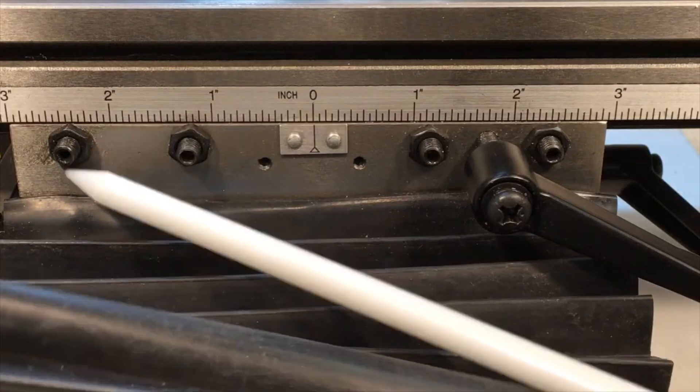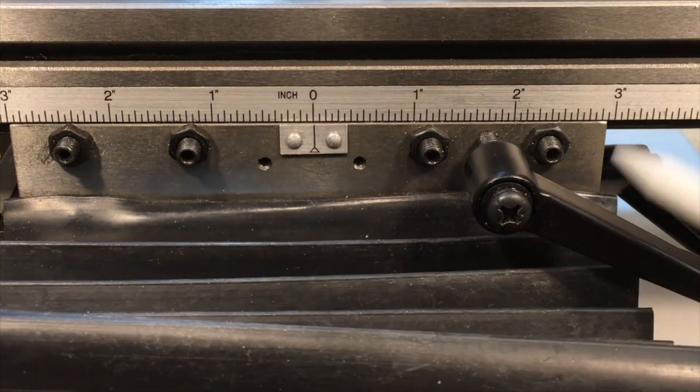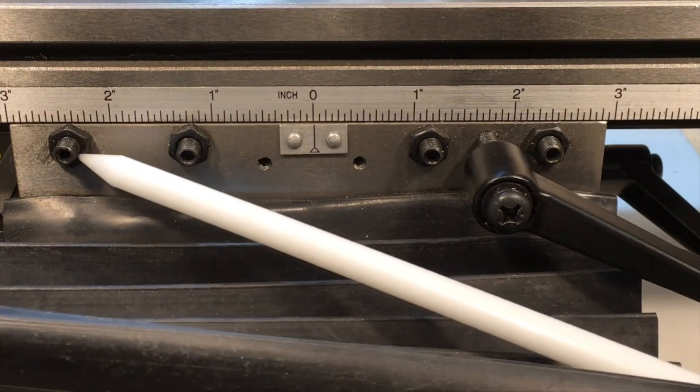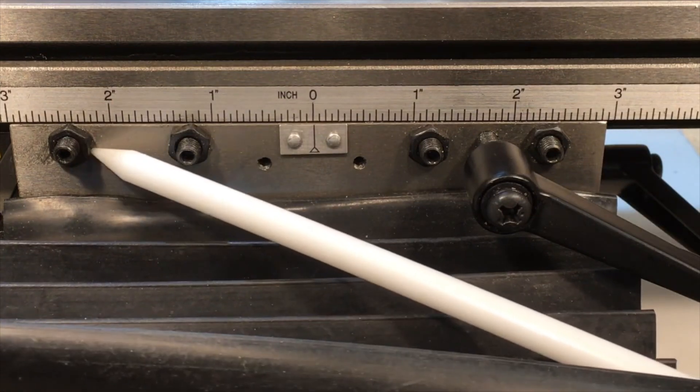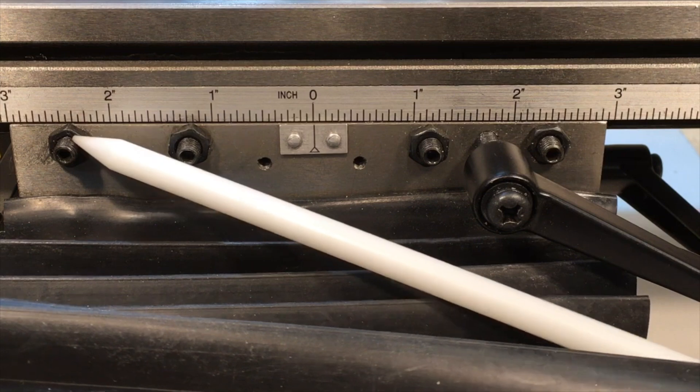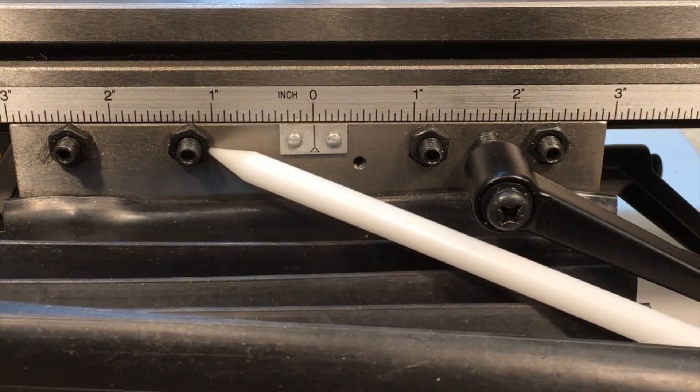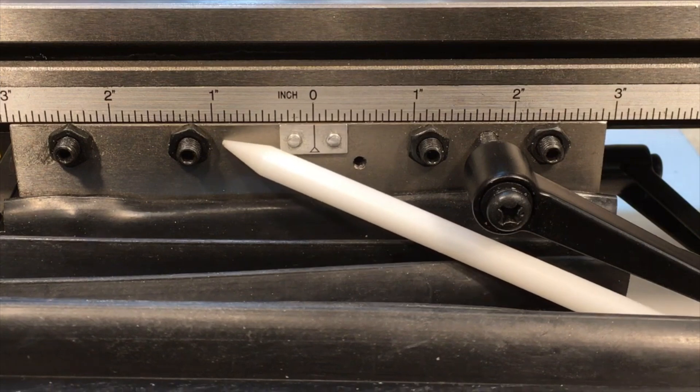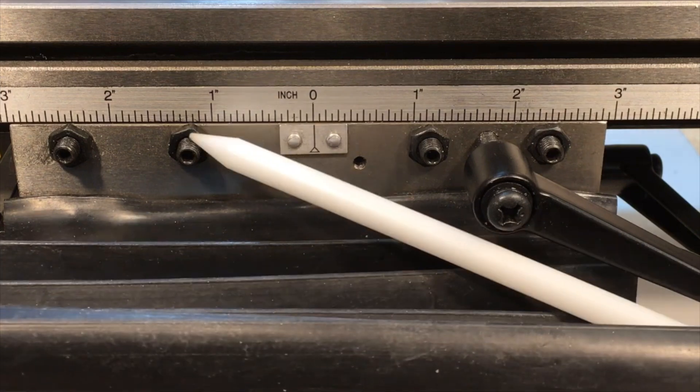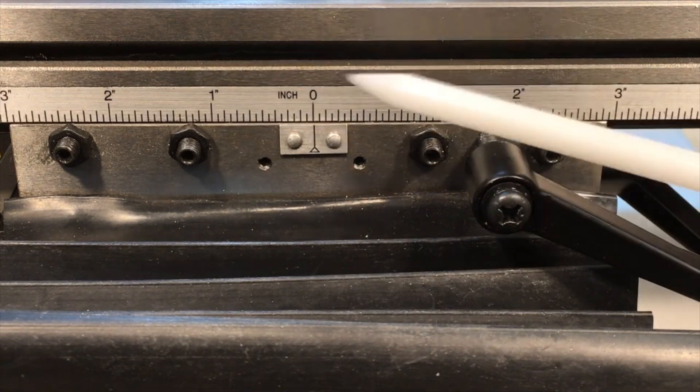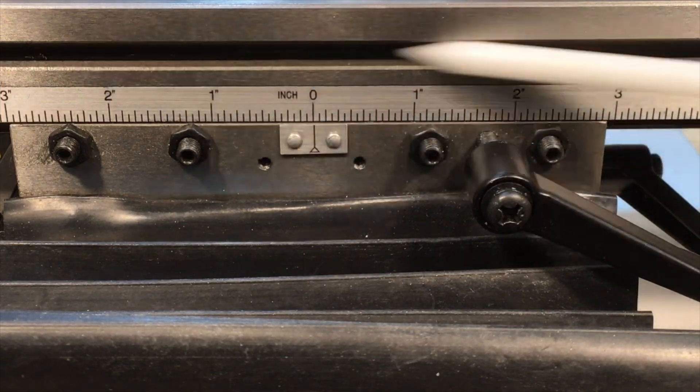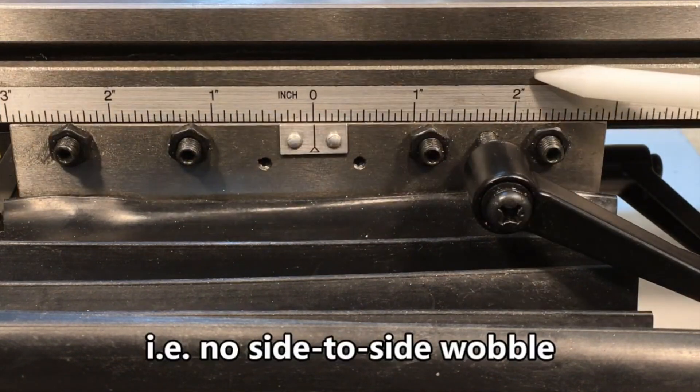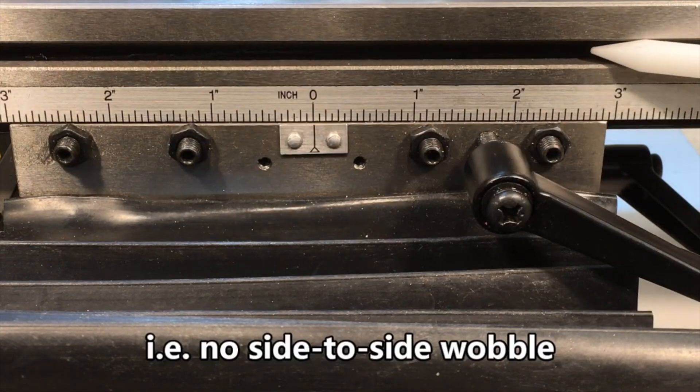Next, we have the x-axis gib adjusting screws. You can see there's four of these, and they each consist of a large set screw and a lock nut. The objective of these screws is to butt up against the gib strip to apply just enough pressure so that there is minimal clearance between the gib strip and the dovetail of the table. That ensures that the table stays very accurately parallel when it's moving left to right while providing enough clearance so that it's not binding.